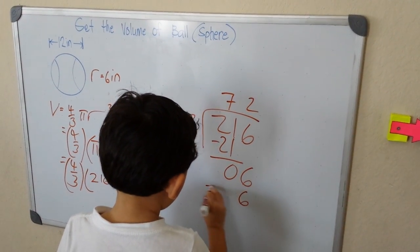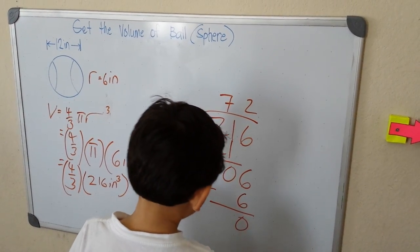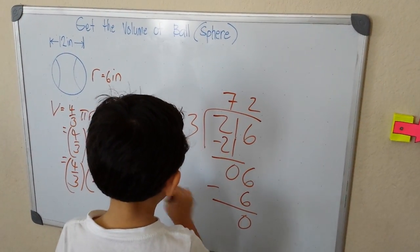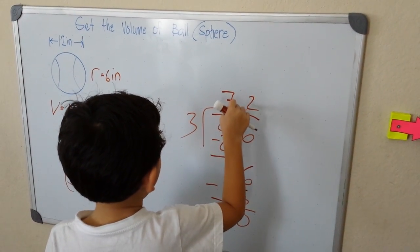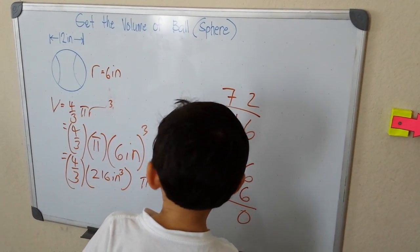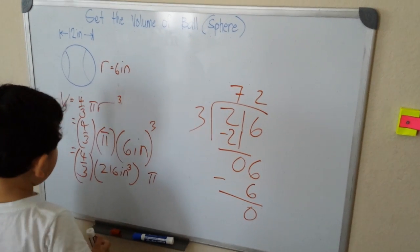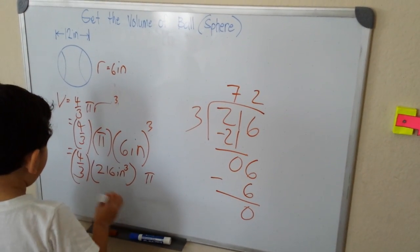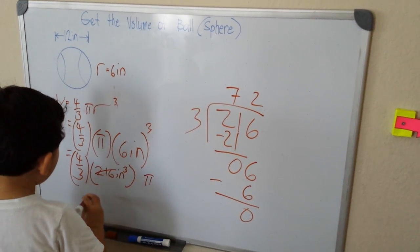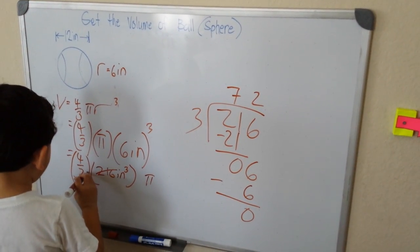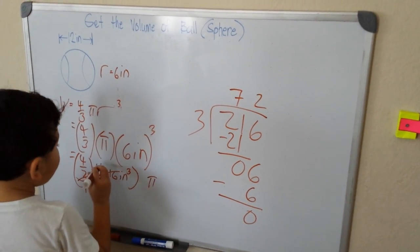So 2 times 3 is 6, and 6 minus 6 is 0. So we get 72. We can cross cancel 216 and 3 to 72 and 1.